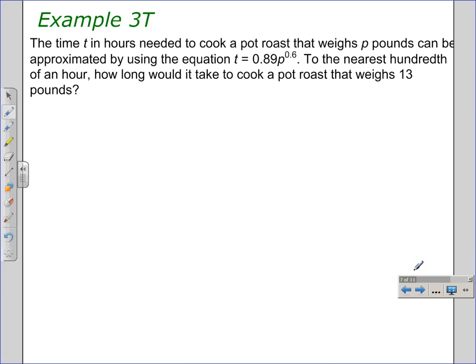Example 3 brings us to a word problem. It says the time t in hours needed to cook a pot roast that weighs p pounds can be approximated by using the equation t equals 0.89p to the 0.6 power. To the nearest hundredth of an hour, how long would it take to cook a pot roast that weighs 13 pounds?